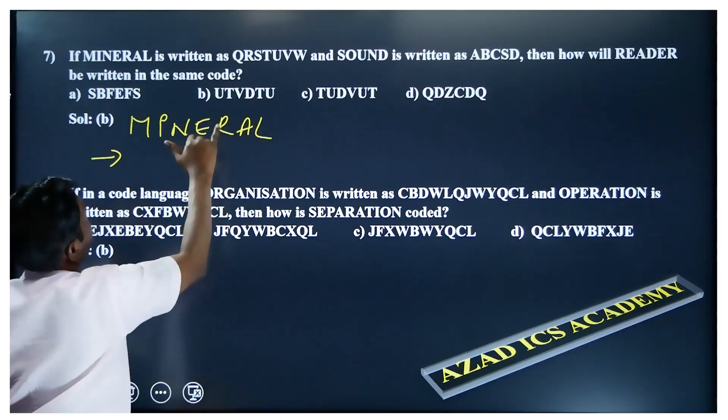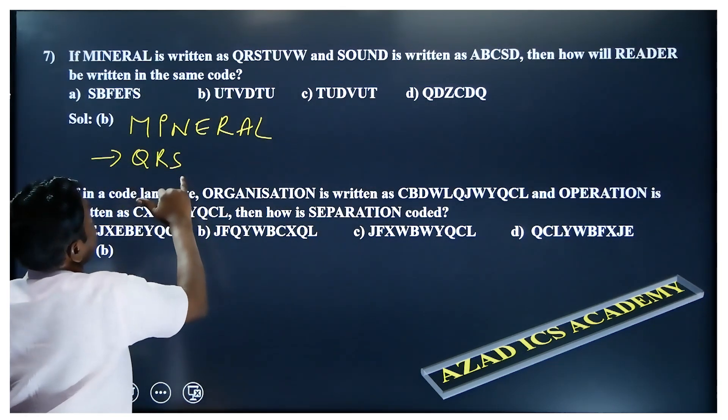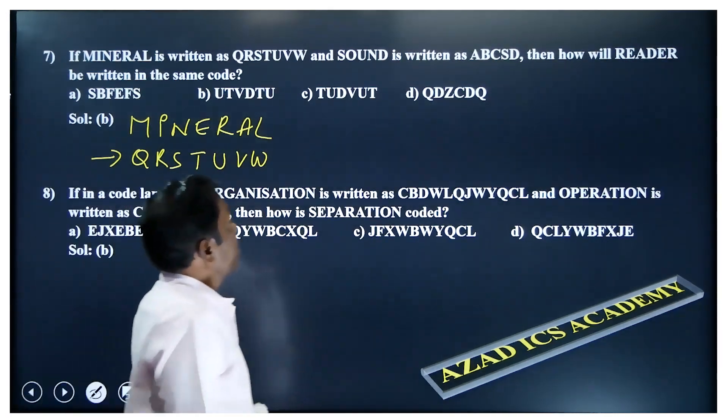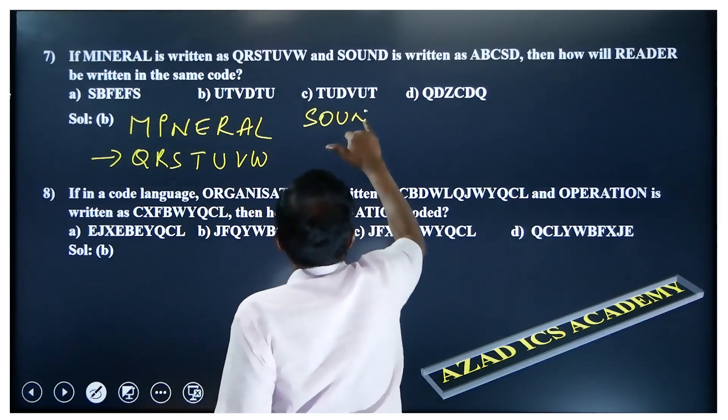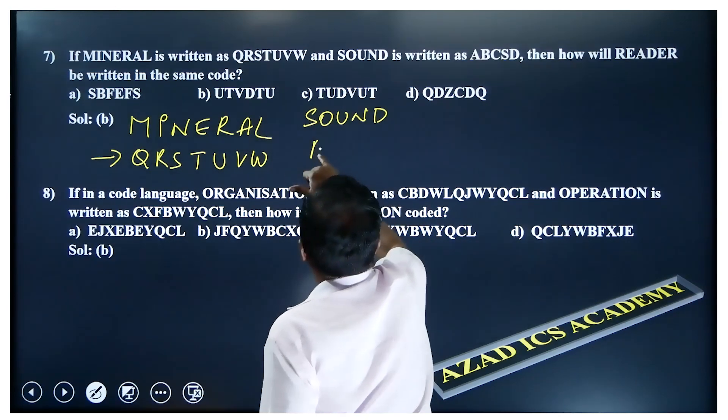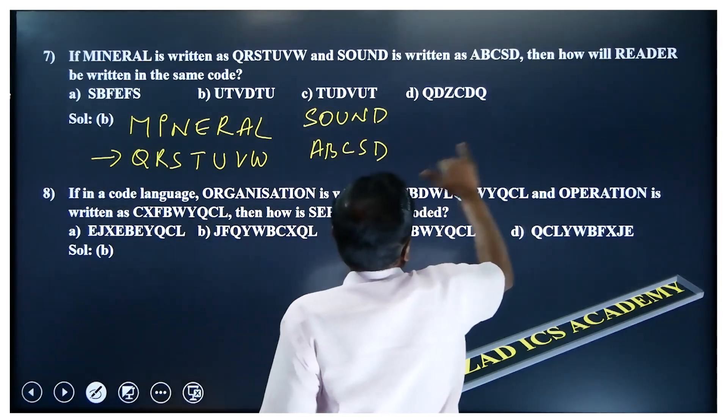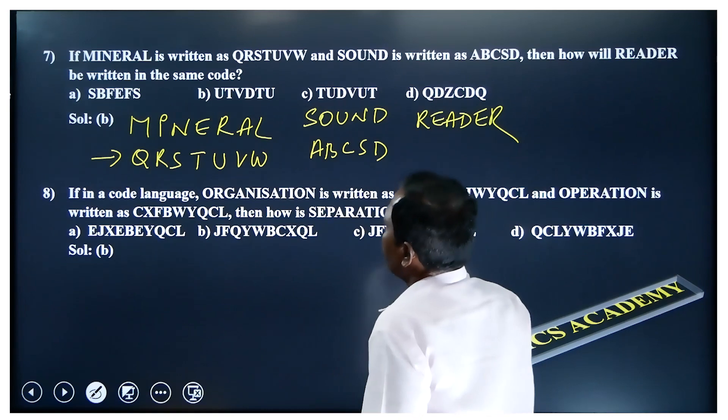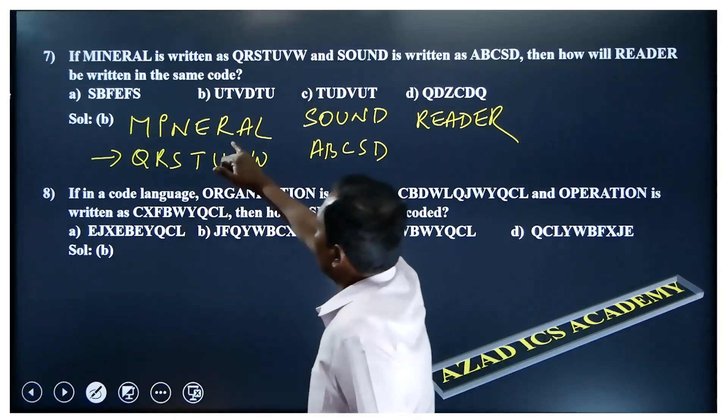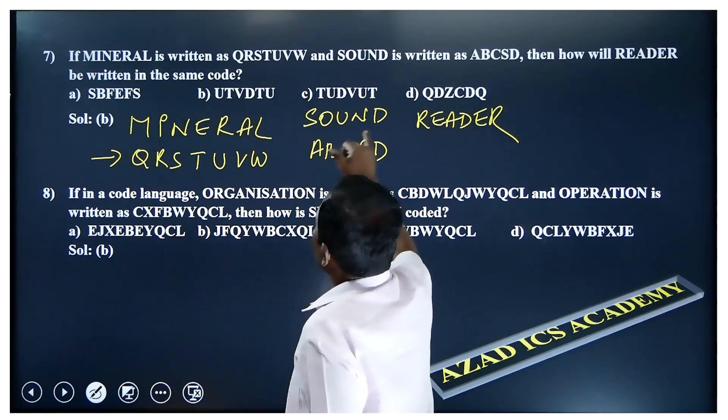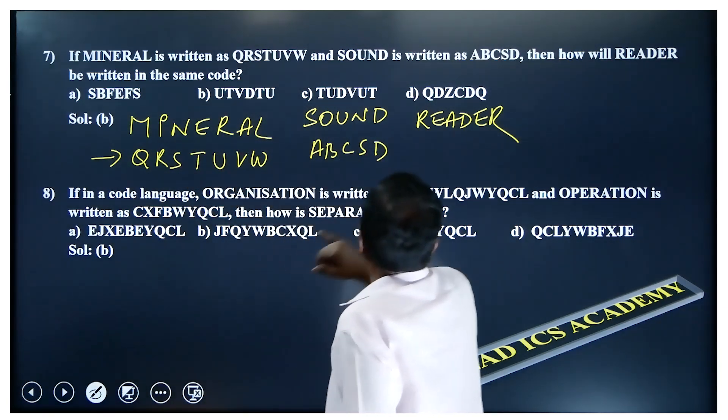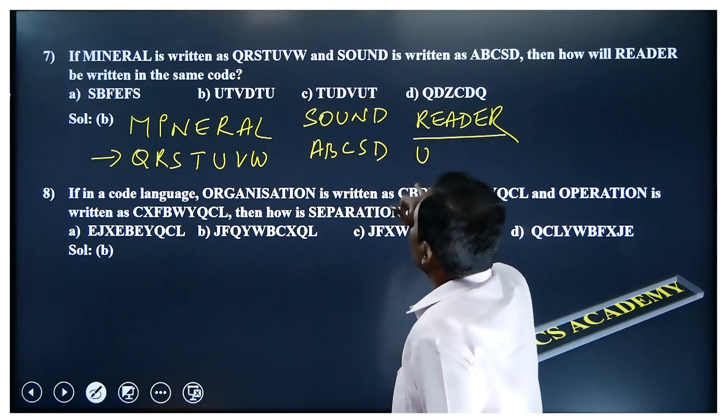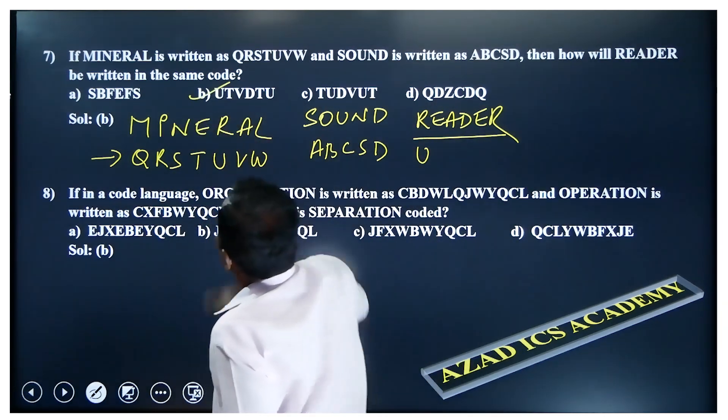Next. MINERAL is written as Q-R-S-T-U-V-W, and SOUND can be written as A-B-C-S-D. Then how will READER be written? R-E-A-D-E-R. Reader. Right. R, what is the R here? You can see R can be coded as U. U, there's one option. Okay.